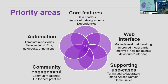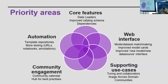Briefly on priority areas: apart from contributions of models and datasets, we are working strongly on core features. One hard challenge is that models are developed with certain dependencies — some work with specific TensorFlow versions, some with PyTorch — and handling those dependencies to keep models servable and runnable with an image is very challenging. We are actively working on how to handle these dependency conflicts.